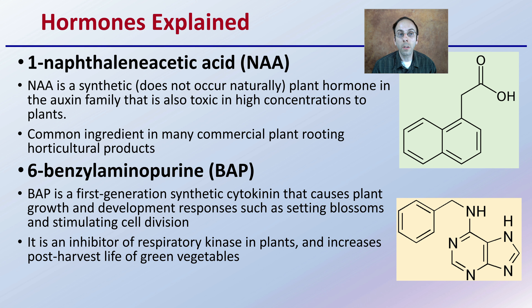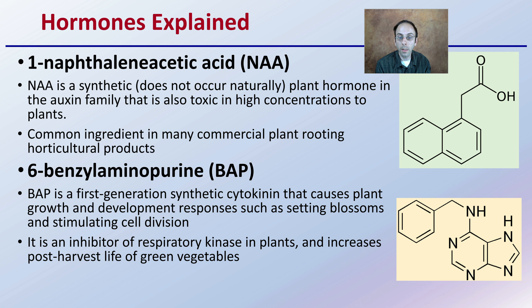A lot of products say naturally occurring auxins. This one is synthetically produced, but it is in the auxin family, which is a naturally occurring plant hormone. BAP is the first-generation synthetic cytokinin, another plant hormone that causes plant growth and development responses such as setting blossoms and stimulating cell division. It is an inhibitor of respiratory kinase in plants and increases post-harvest life in green vegetables.